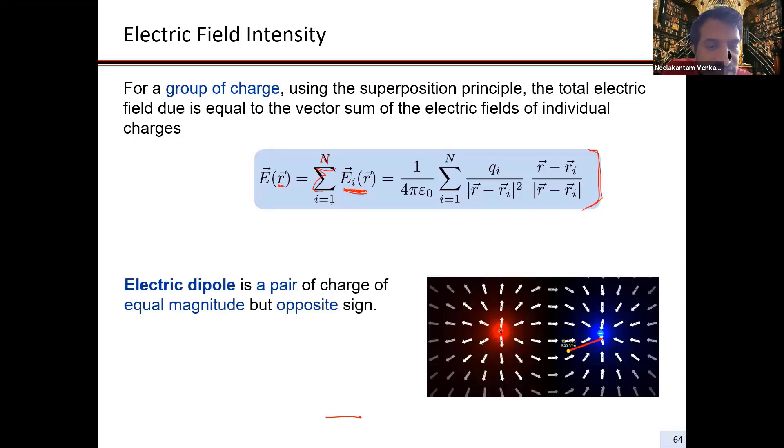If you have a pair of charges, plus and minus, you call that a dipole. Di means two. Then you have two charges, plus and minus.